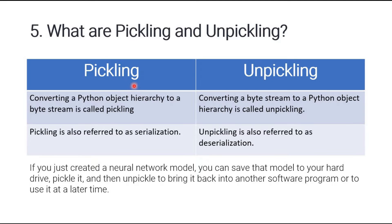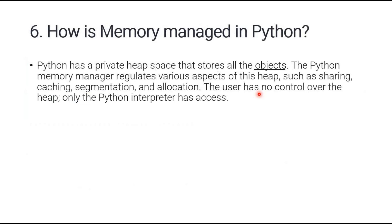Question number five: what is the concept of pickling and unpickling? Converting a Python object hierarchy into a byte stream is called pickling, also referred to as serialization. The reverse — converting a byte stream back to a Python object hierarchy — is called unpickling, or deserialization. For example, if you've created a neural network model, you can save it to your hard drive by pickling it, then unpickle it to use it later in another program.